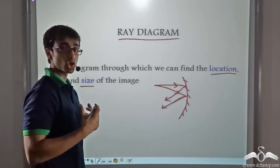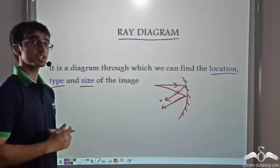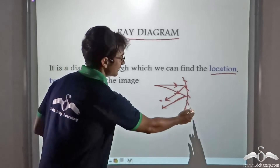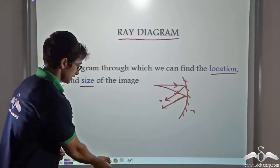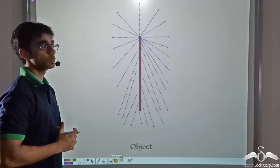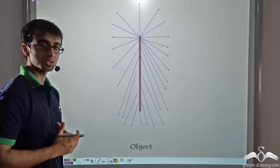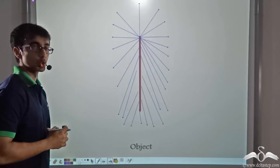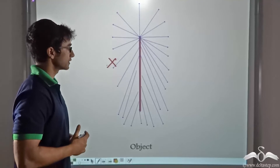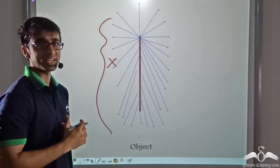Because we know in case of a concave mirror, the reflected rays will converge at a point in space, and in case of a convex mirror, the reflected rays will seem to be diverging from a point behind the mirror. Now you must be wondering that there are many rays of light which are leaving an object. So do we need to consider all these rays incident on a mirror? We do not need to consider all these rays because the task of drawing a ray diagram would become very tedious.